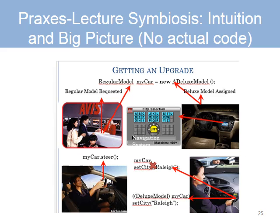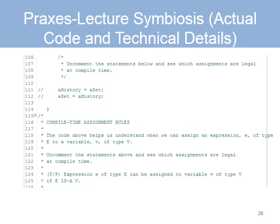To illustrate, students can be given a traditional lecture that illustrates type checking using a car rental analogy. If they have asked for a regular model, they would not object to getting a deluxe model, but they would object in the reverse case. This presentation can be complemented with actual Praxis code that shows type checking at work.